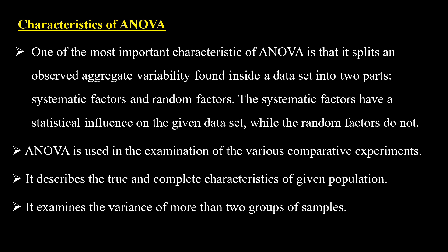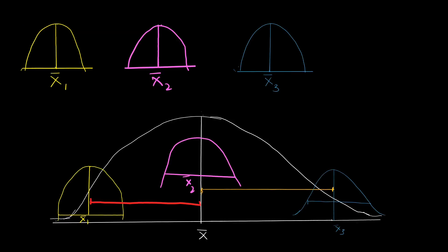In a simple way, I am going to explain by taking the means. To study ANOVA, we need two data sets: variability between the means and variability within the distribution or variability within the given samples. Now observe here — we have means X1-bar, X2-bar, X-bar, and X3-bar. Variability between means is represented by this red line, which shows the difference between X1-bar and X-bar. This is variability between the means.